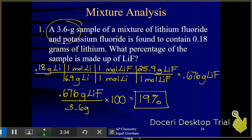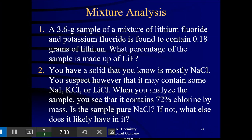That's just one type of problem you could see — you're given a mixture and have to determine the percentage of one part of that mixture. Here's another type of problem you might see. It says: you have a solid that you know is mostly sodium chloride. You suspect, however, that it may contain some sodium iodide, potassium chloride, or maybe lithium chloride — some kind of impurity. When you analyze the sample, you see that it contains 72 percent chlorine by mass. Is the sample pure sodium chloride? If not, what else does it likely have in it?